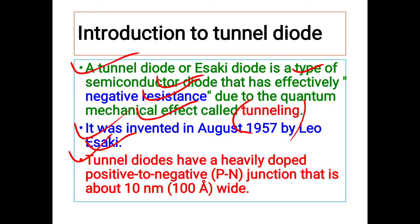Tunnel diodes have a heavily doped positive-to-negative PN junction that is about 10 nanometers, or we can say 100 angstroms, wide. So it has a very narrow width of the depletion region.